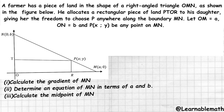A farmer has a piece of land in the shape of a right-angle triangle OMN, as seen in the diagram. He allocates a rectangular piece of land PTOR to his daughter, giving her freedom to choose P anywhere along the boundary MN. Let OM equals a and ON equals b — those are the two side lengths.